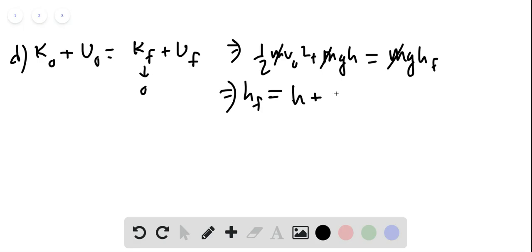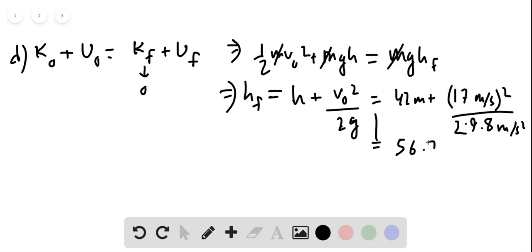you get H-final is equal to H plus V-naught squared over 2g. So this is simply 42 meters plus 17 meters per second, quantity squared over 2 times 9.8 meters per second squared, giving you final height of 56.7 meters.